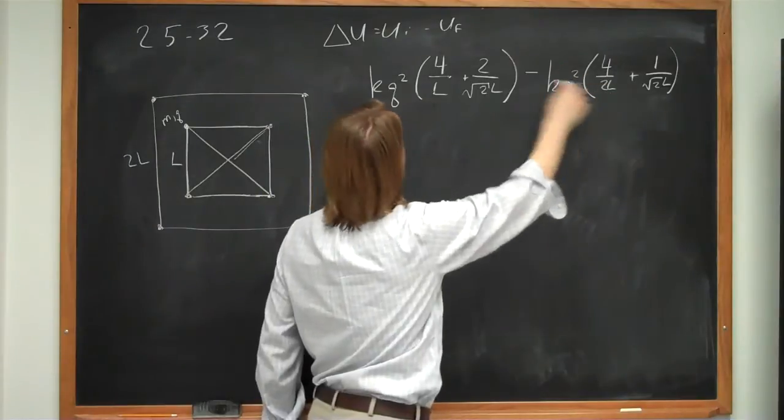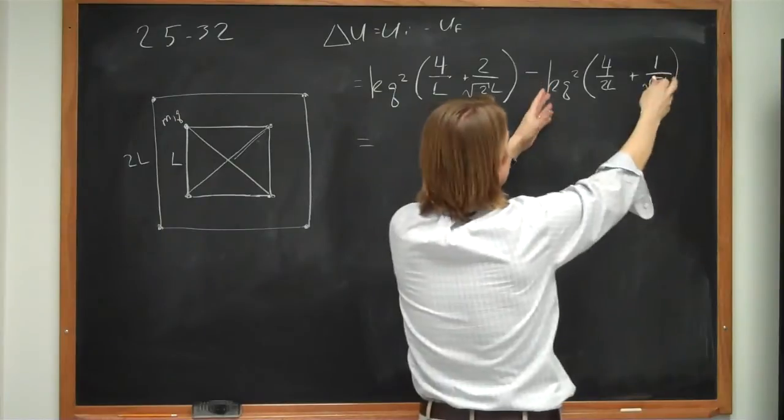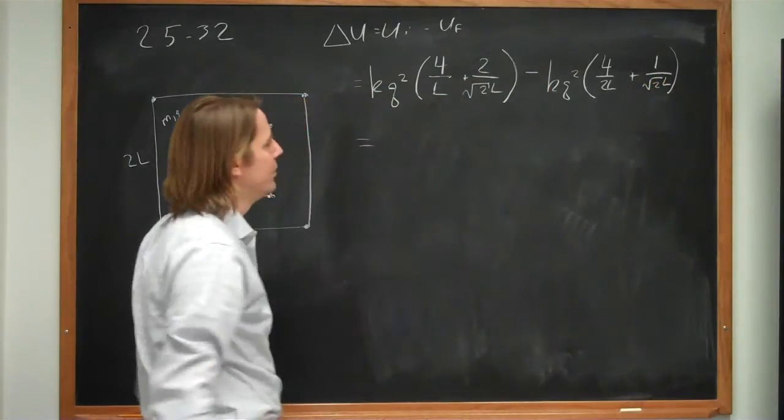When you subtract these two things, so this is delta U. Really, you're taking this thing and taking away half of it. So the answer is just that it's half of the original value.